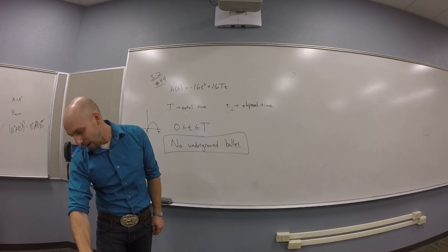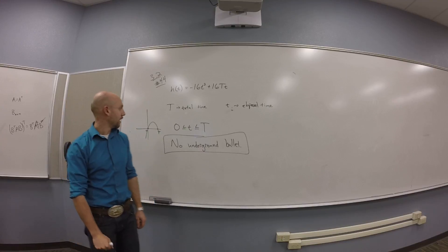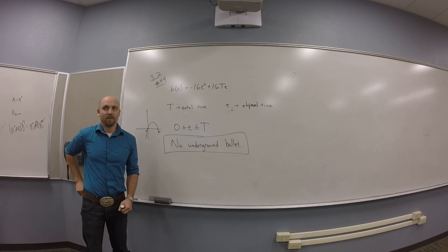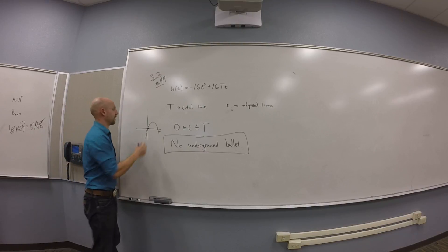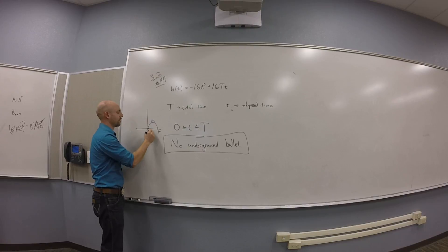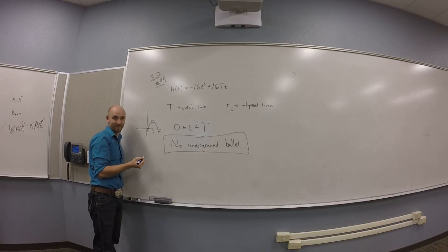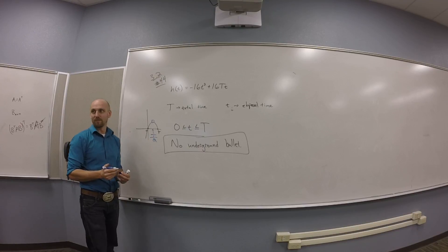Then they say when, in terms of capital T, does the maximum height occur? Specifically exactly between 0 and... Yeah, so maximum height's right there. That happens halfway between 0 and T, capital T, which is at T over 2. Capital T over 2. Right, that's the time at which that occurs.